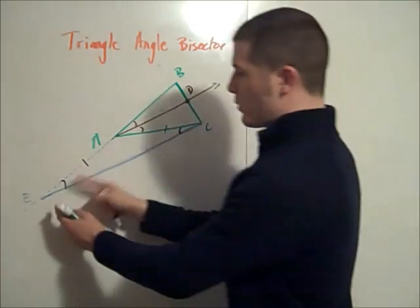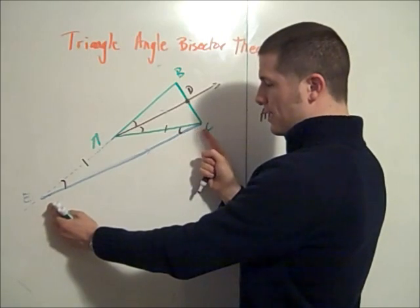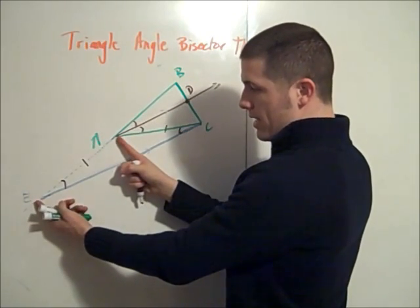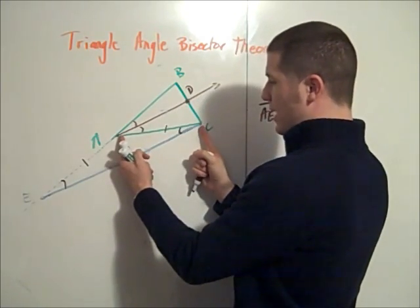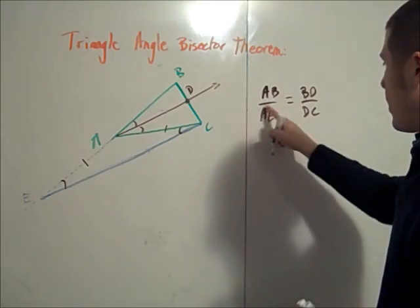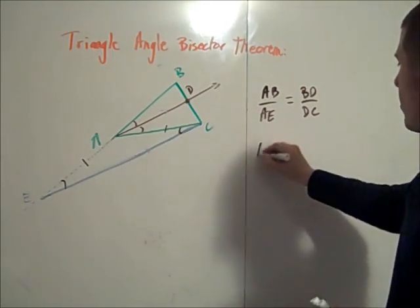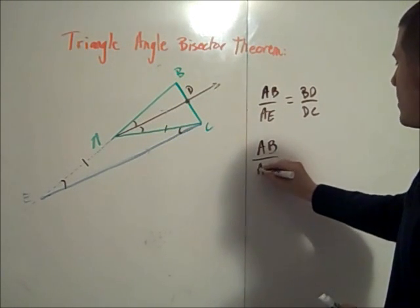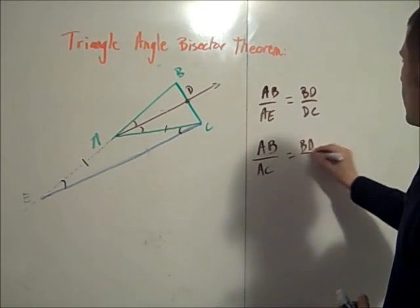Except we just decided that triangle ACE is isosceles, and so AE is equal to AC. And so I can make that substitution here, therefore AB over AC is equal to BD over DC.